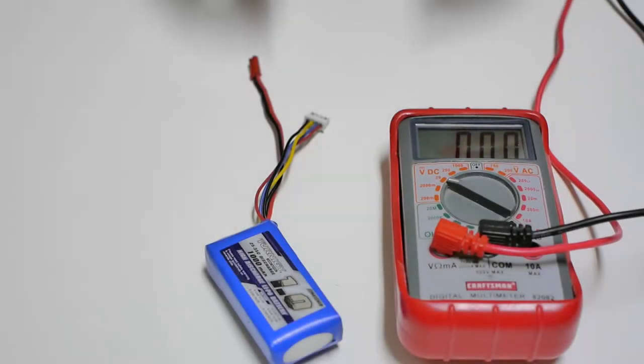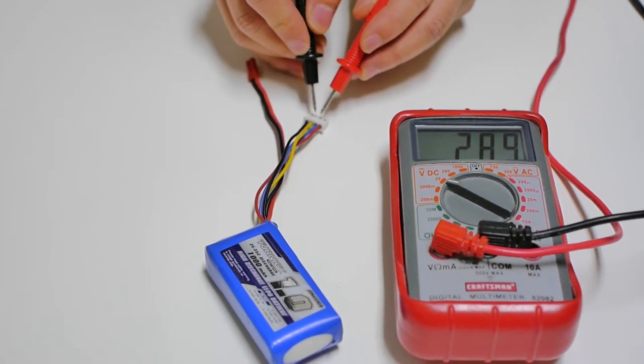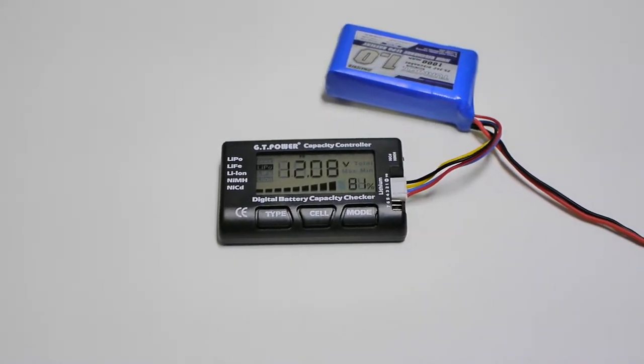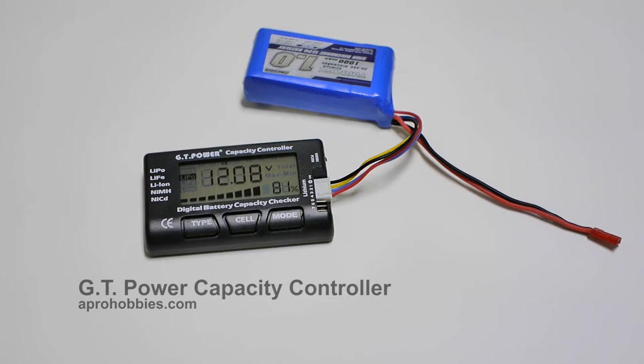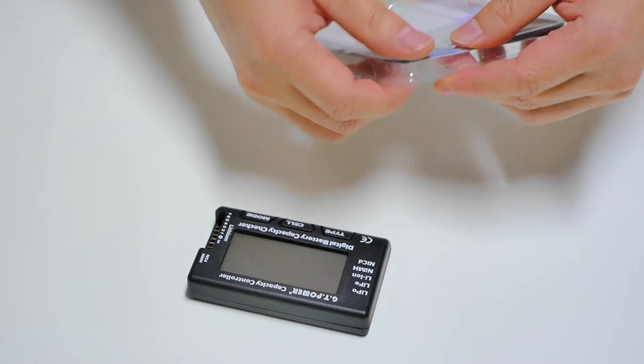Have you ever wondered how you can check the status of your battery pack out in the field without using a massive digital monitor? Today we are going to take a look at the GT Power capacity controller.